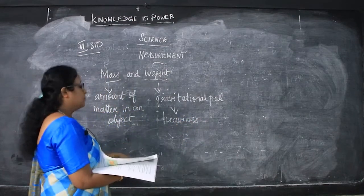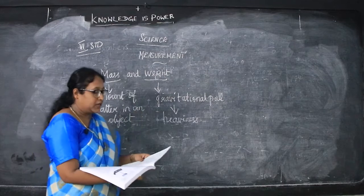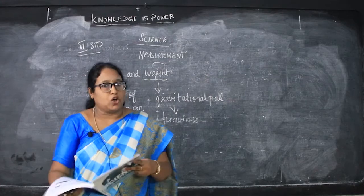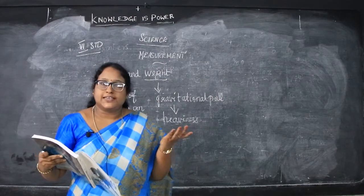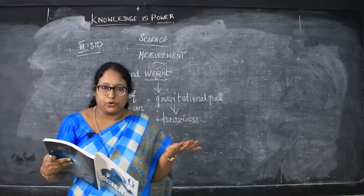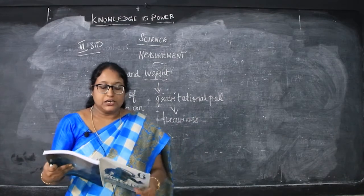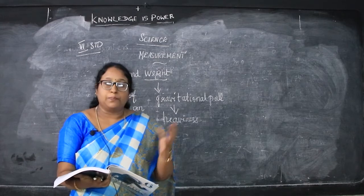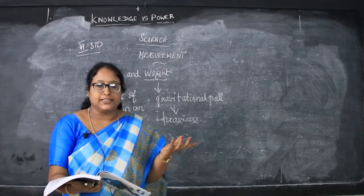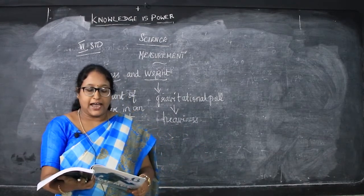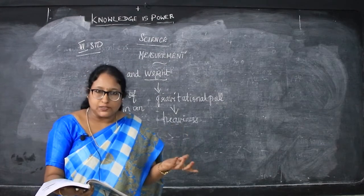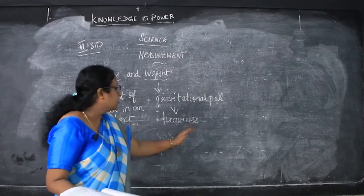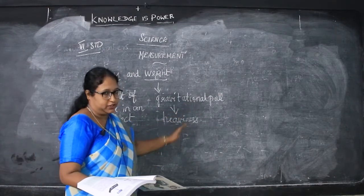We are going to see the mass and weight now. For example, you hold a sheet of paper in one hand and a book in the other hand. Which is heavier? Book is heavier. The pull on the book is more than that of the paper, so the hand has to give more force to hold a book than a paper. This is called heaviness — that is, gravitational pull or heaviness.